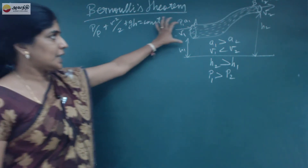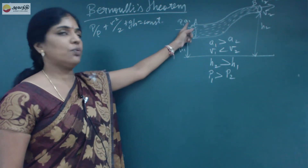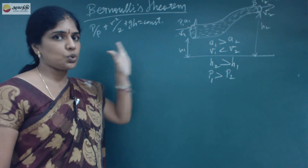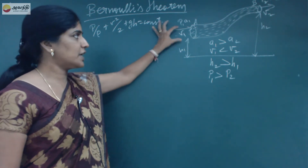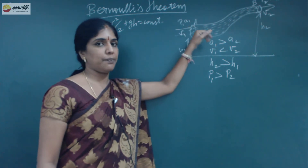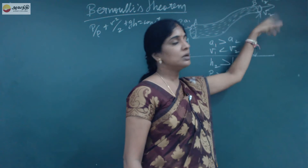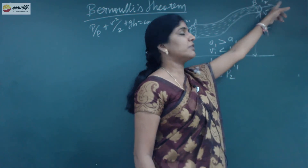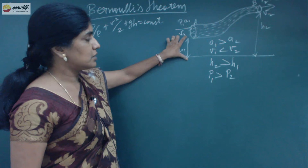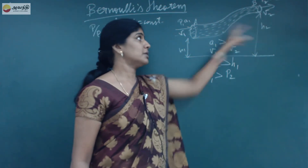Consider a tube. At point A, the pressure force is given by P1A1. Let V1 be the velocity with which water enters the tube at point A, and let V2 be the velocity with which water leaves at point B. The force at B is given by P2A2.